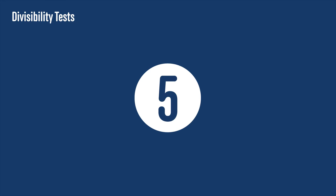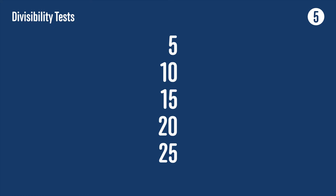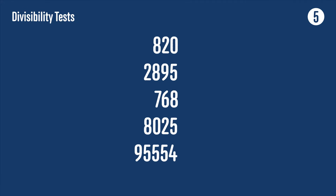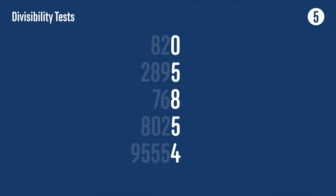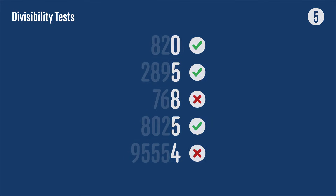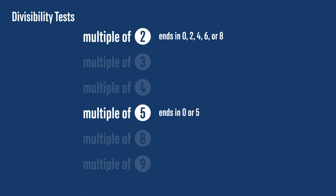Divisibility by 5 also has an easy test. If you think about the 5 times table — 5, 10, 15, 20, 25 and so on — you'll notice that multiples of 5 always end in a 5 or a 0. So we just need to look at the last digit. If it's a 0 or 5, the number is a multiple of 5, and if not then it isn't. So that's the easy ones taken care of.